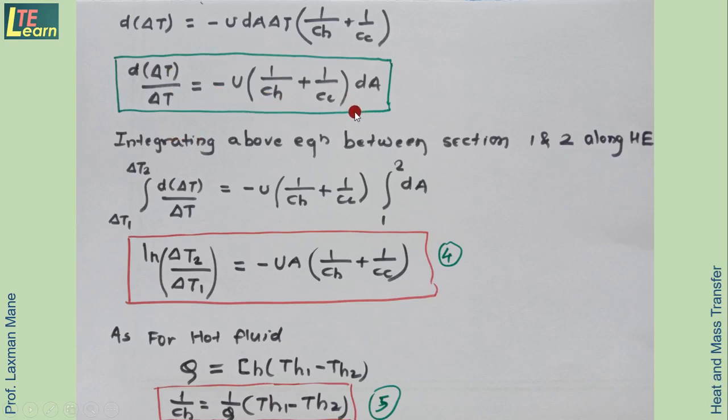The equation becomes d of delta T equals minus U dA delta T times the bracket. Taking delta T to the left side, then integrating this equation between inlet and outlet, 1 and 2. Writing the integration with lower limit delta T1 and upper limit delta T2 on the left side. On the right side, minus U and the bracket are constants and remain outside the integration sign. Integration is from 1 to 2 over the length of the heat exchanger for dA. Integration of the left side term gives natural log of delta T. Putting the limits gives natural log of delta T2 upon delta T1 equals minus U times the bracket times A. This is equation 4.